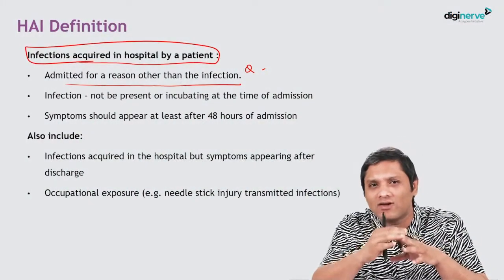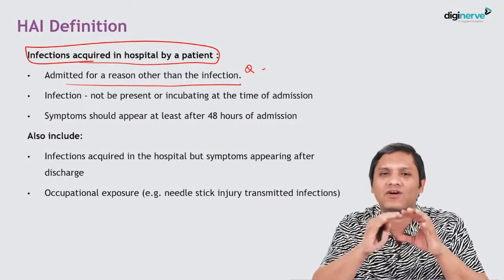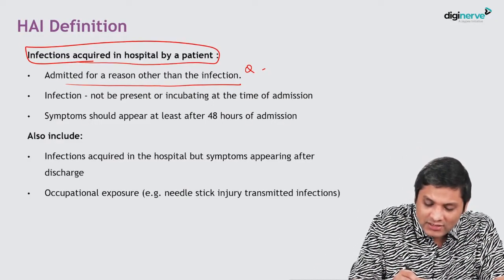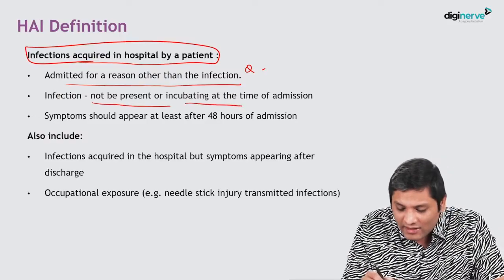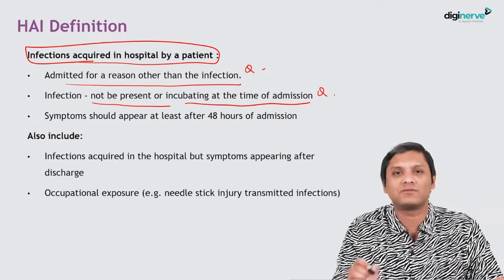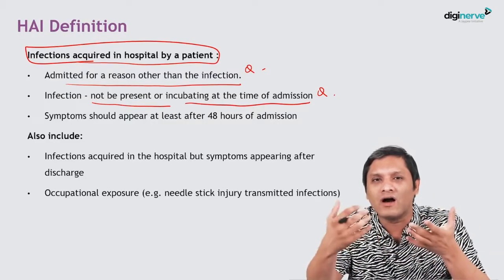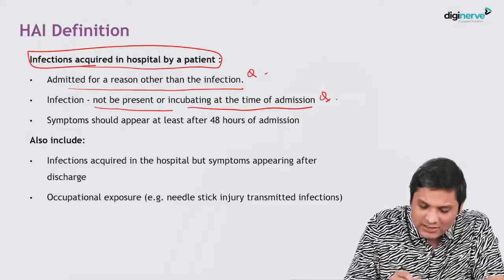A Healthcare Associated Infection (HAI) is an infection which has been developed in the hospital. For any other cause the patient has been admitted to the hospital, the infection should not be present, neither should it be incubating at the time of admission. So if a patient has developed hospital-acquired pneumonia, at the time of admission the patient should not be having symptoms, neither should the organism be incubating.